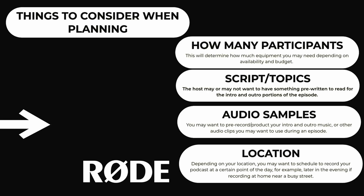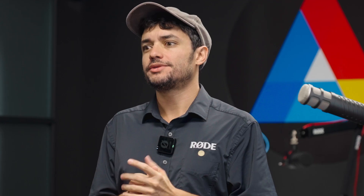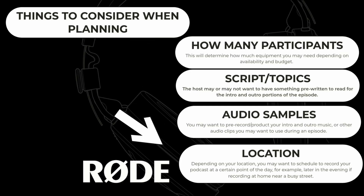In the planning process, you also might want to think about audio samples that you want to use. This relates to both your intro and your outro music, sound effects that you use every episode, and things in the middle like a bridge or a transition.